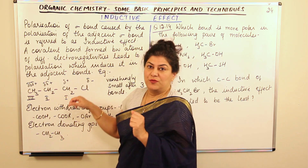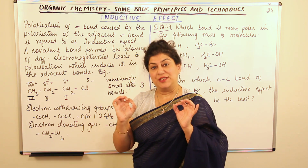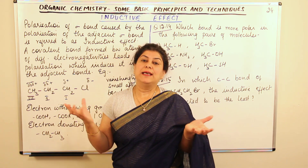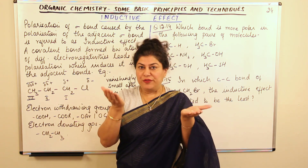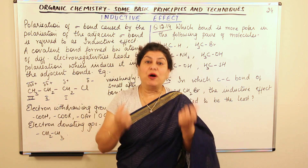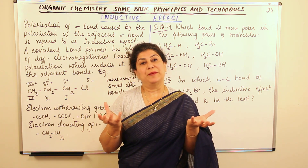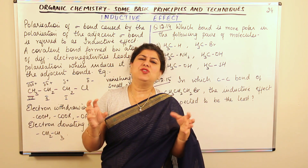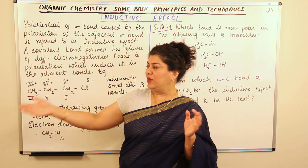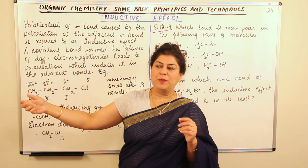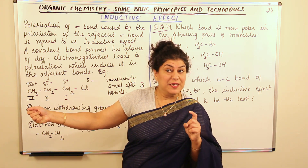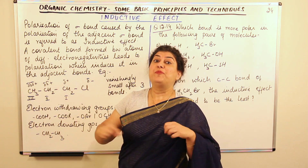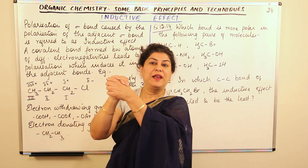When two atoms of different elements are joined by a covalent bond, their electronegativities differ. One will be more electronegative and the other less. If the electronegativity difference is not much, you can ignore the effect — just as a small energy difference in a tug of war would not greatly affect the outcome. But if the difference is far greater, the effect becomes more pronounced.